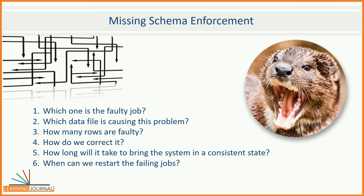And now begins the hell of debugging your application — finding answers to questions like: which job is faulty, which data file caused this problem, how many rows are faulty, how do you correct it, how long will it take to bring the system to a consistent state, and when can we restart the failing jobs? Schema on read is a great thing to implement schema evolution, but it causes a big mess when we do not validate whether the tool supports that evolution. Apache Spark does not support evolving an int column to a double column. Delta Lake takes care of this problem.